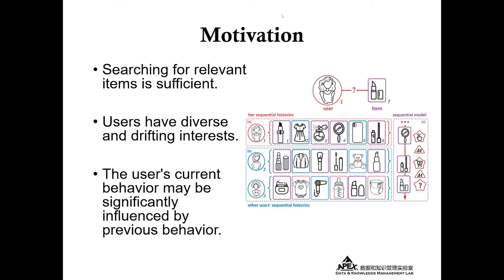Secondly, users have valuable and drifting interests, and each interest has its own development process. For example, the purchase cycle of lipstick and cell phone is obviously different. So it is necessary to model the temporal pattern for each interest.